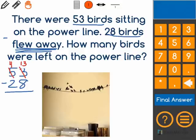13 minus 8 is 5, and 4 minus 2 is 2. So I know that my answer is 25 birds were left.